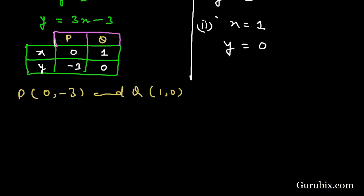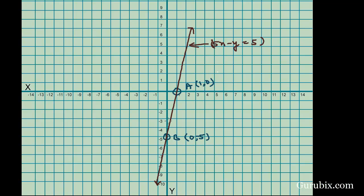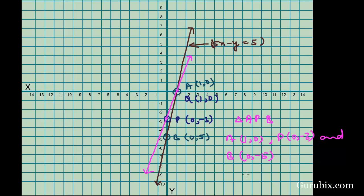We plot point P at (0, minus 3) and point Q at (1, 0) on the graph paper, then draw a straight line through these two points P and Q. We observe that these two straight lines and the y-axis form a triangle. The vertices of the triangle are: A at (1, 0), P at (0, minus 3), and B at (0, minus 5).